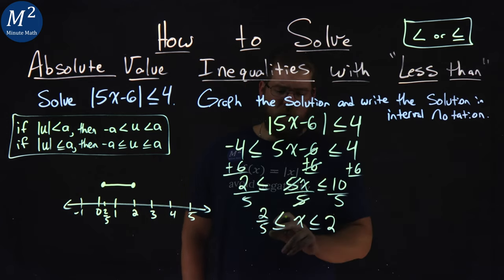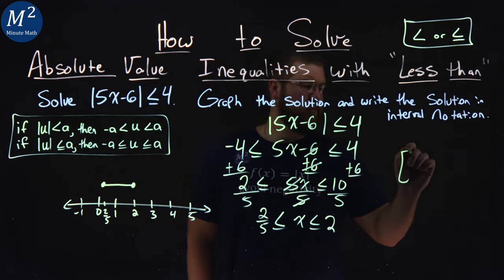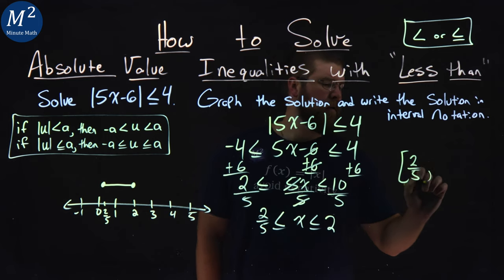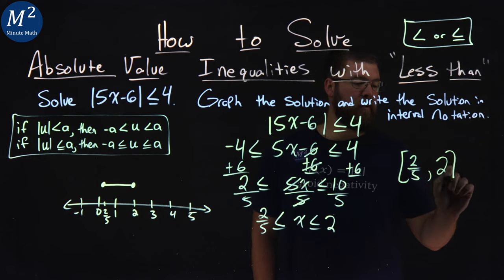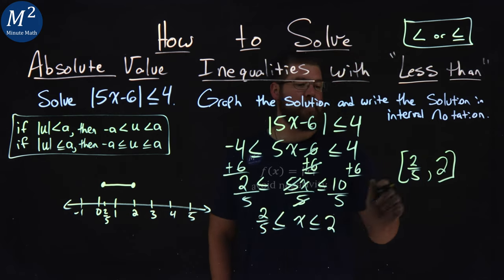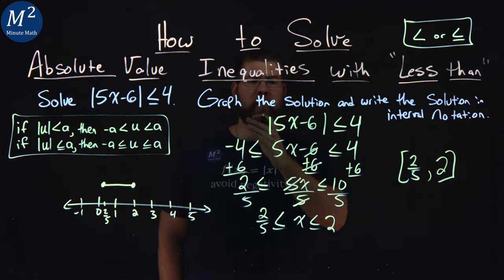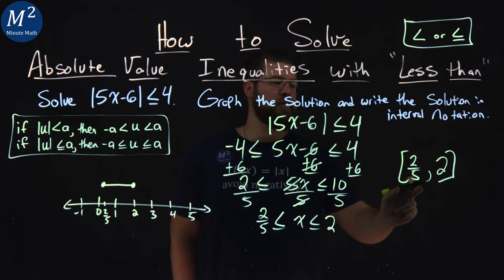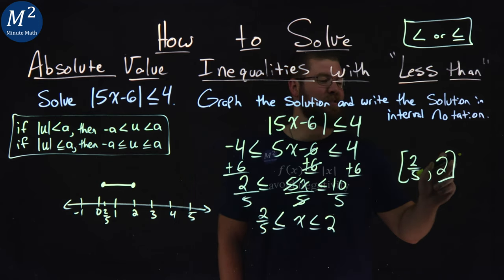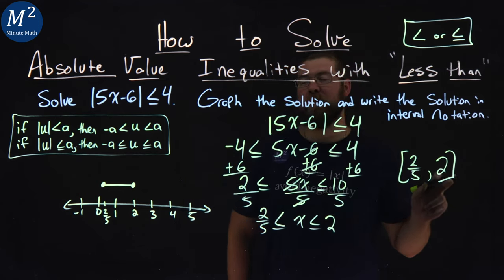What about interval notation? Well, x can equal 2 fifths, so we put a bracket there. And it can equal all the way up to 2, so put 2 there and put a bracket as well to show that it can equal 2. And there we have it. We've graphed our solution right here and wrote the solution in interval notation: bracket 2 fifths to 2 and another bracket to close it up.